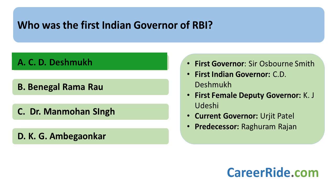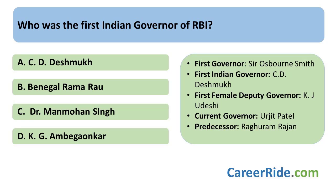He also helped in the establishment of the Industrial Finance Corporation of India, which focused on the promotion of rural credit. Subsequently, he served as the Finance Minister in the Union Cabinet from the year 1950 to 1956.